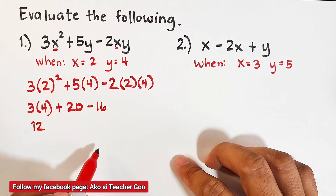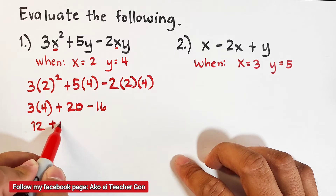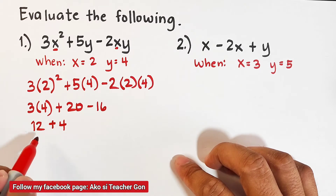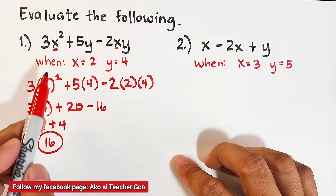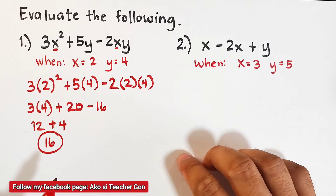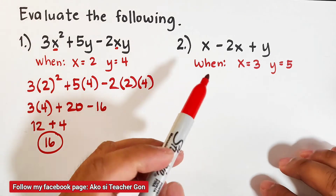So we simplify: 3 times 4 is 12, then 20 minus 16 is 4, so we have plus 4. All we need to do is add 12 and 4 — 12 plus 4 is 16. This is the evaluated answer of 3x squared plus 5y minus 2xy. Let's continue with number two.